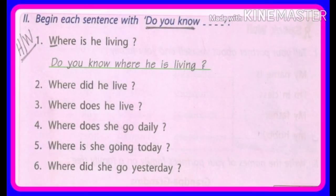Begin each sentence with 'Do you know?' — this is your homework. यहाँ पर जो 'do you know' लिखा है उसमें से आपको start करना है, जैसे example दिया गया है: 'Where is he living?' — वो कहाँ रहता है. तो आपको 'do you know' पहले लिखना है और जो W capital letter में है वो small letter करके लिखना है. So this is your homework.